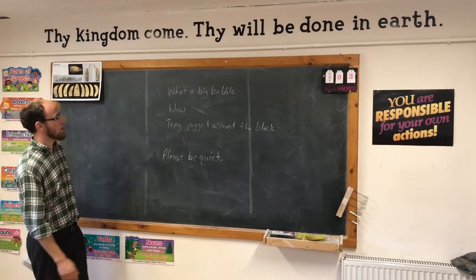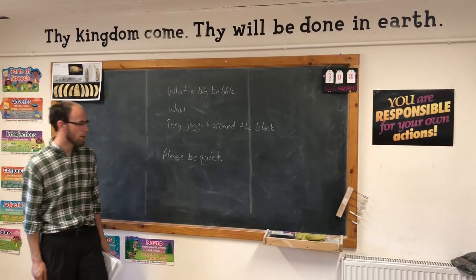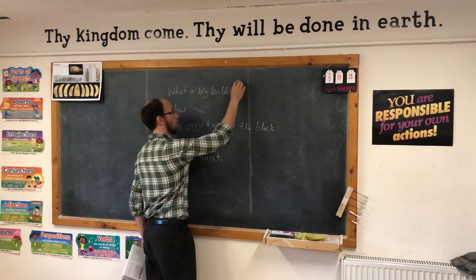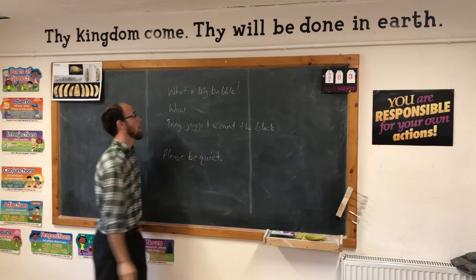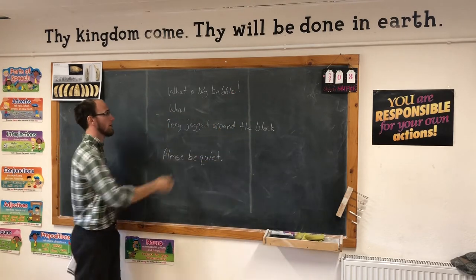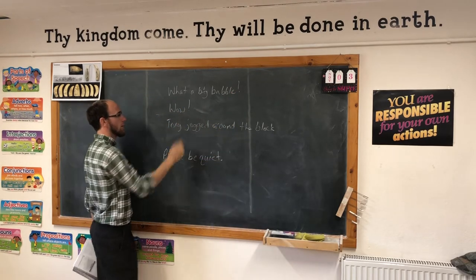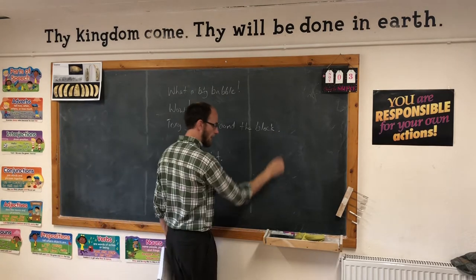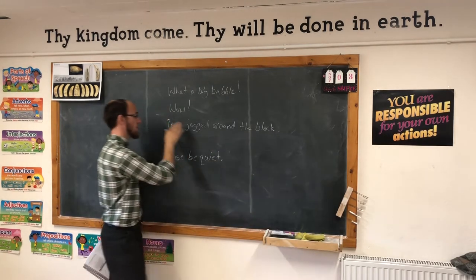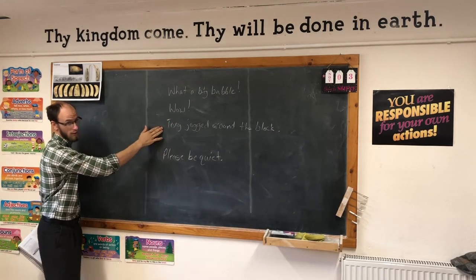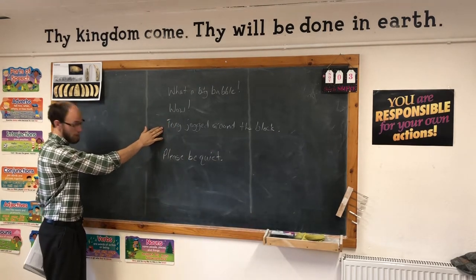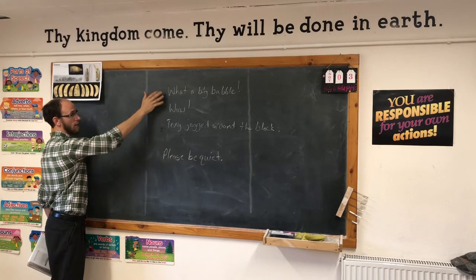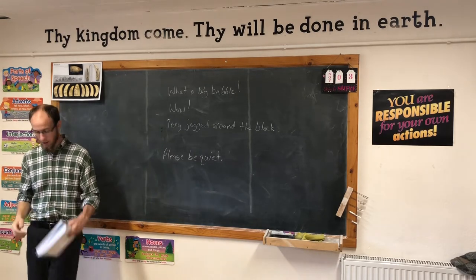Let's add punctuation to the sentence. 'What a big bubble' — exclamation point. 'Wow' — exclamation point. 'Tony jogged around the block' — period. This sentence is a declarative, and this is an exclamatory. Great.